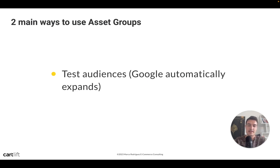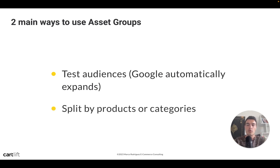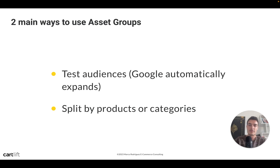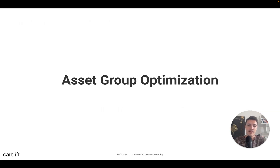There are two main ways to use asset groups. The first is to test audiences — Google will automatically expand them anyway, but you can test multiple seed audiences to see which performs best. The second is to split by products or categories. And of course the fundamental thing is testing different assets — different images, different videos — within those asset groups.